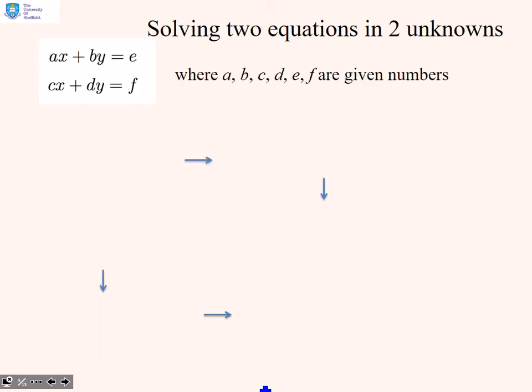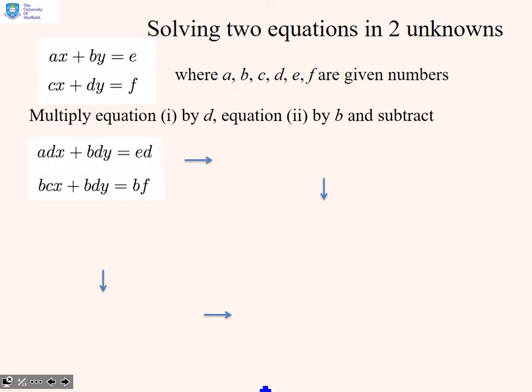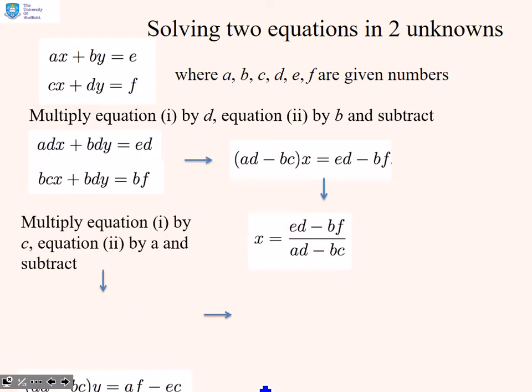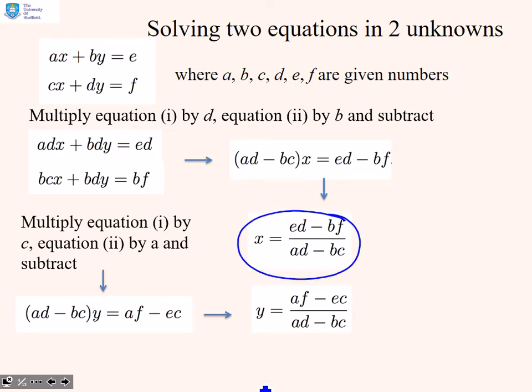Let's remind ourselves of how we solve two equations in two unknowns. This slide we've covered earlier, so we'll do it quickly. We use standard approaches like multiply the first equation by d and the second by b, subtract, and we get a solution for x. Or multiply equation one by c and two by a and subtract, and you'll see we get these well-known solutions.